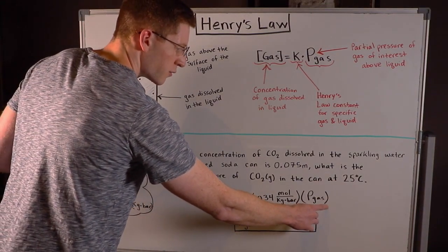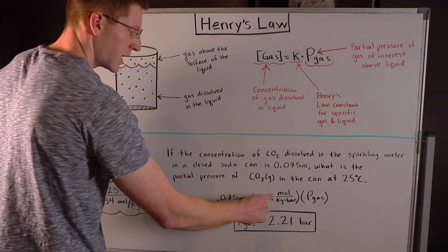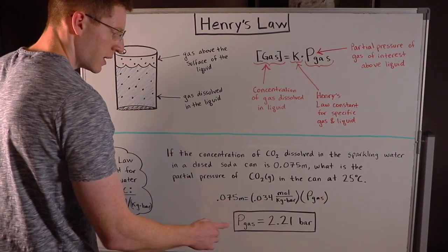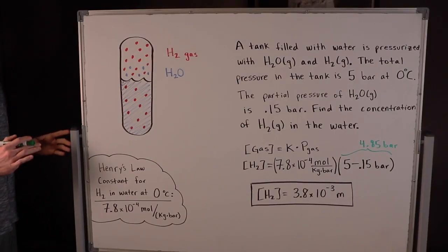Then I solved for P gas because they asked for the partial pressure of the CO2 gas in the can at 25 degrees Celsius and I found that it was 2.21 bar. All right let's do another example problem.